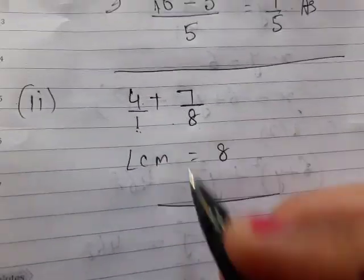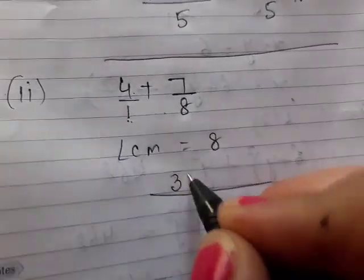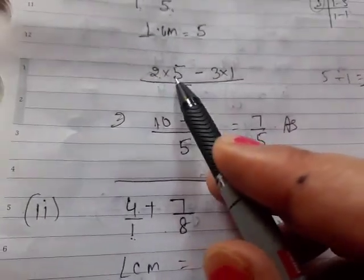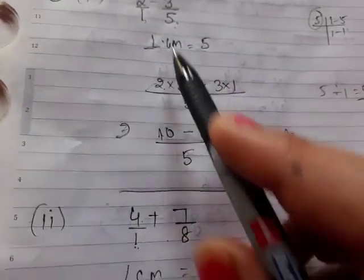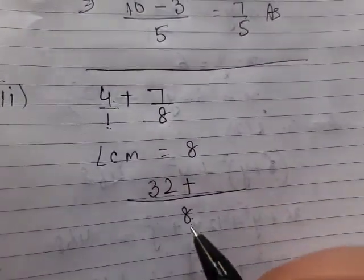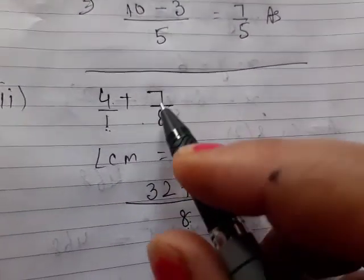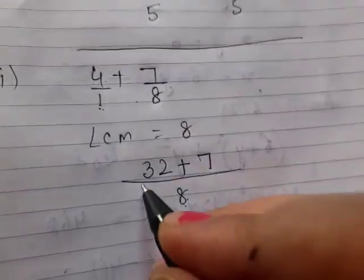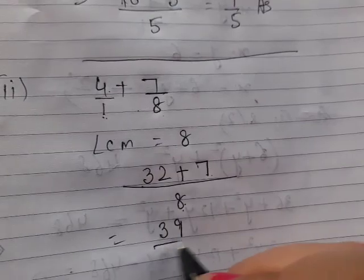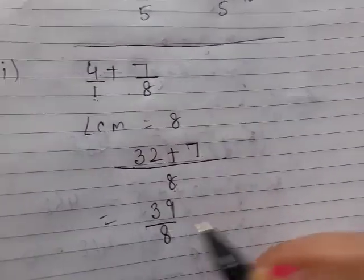That is 1. 1 times 4 equals 32, plus 7, that is 39 by 8. That is your answer.